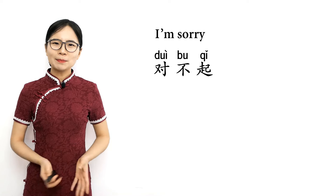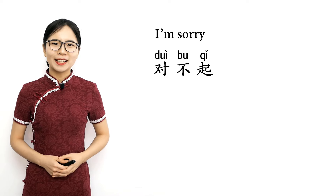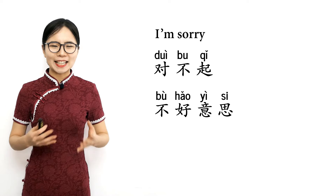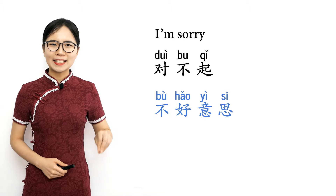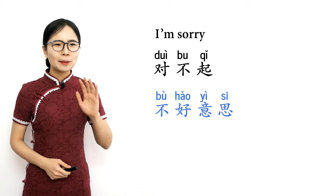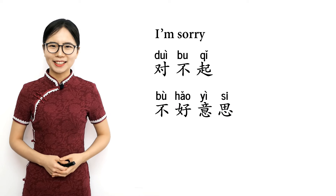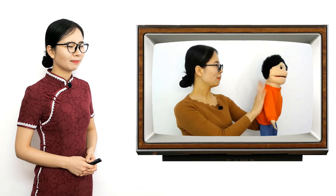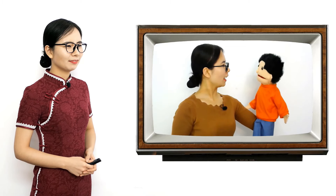For smaller mistakes, like if you dial a wrong phone number or lightly bump into someone, you can say 不好意思, which also means 'I'm sorry,' but it's a lighter apology. Please repeat after me: 不好意思, 不好意思 — I'm sorry. My dad is there. Hi, Baba. I'm not your dad. Oh, 不好意思 — I'm sorry. I thought he was my dad.